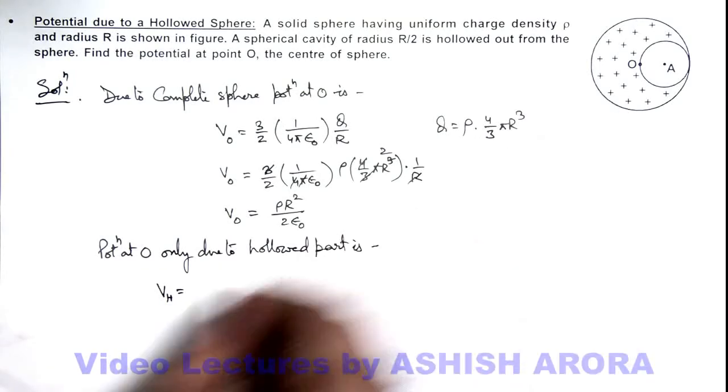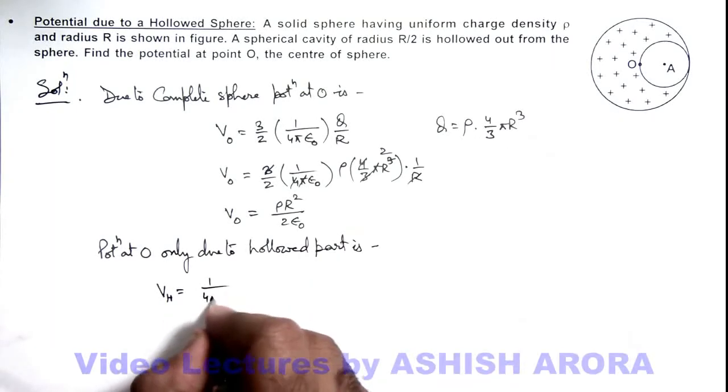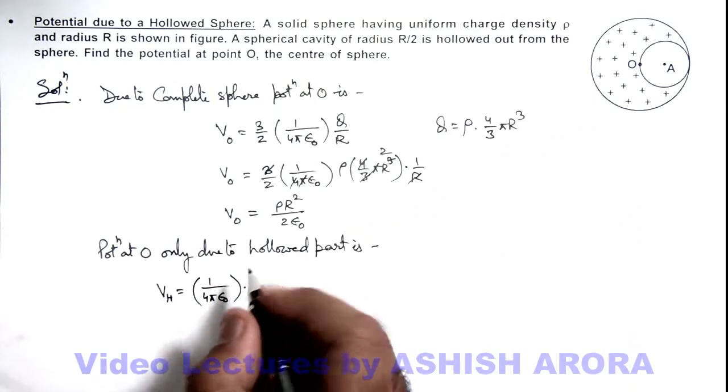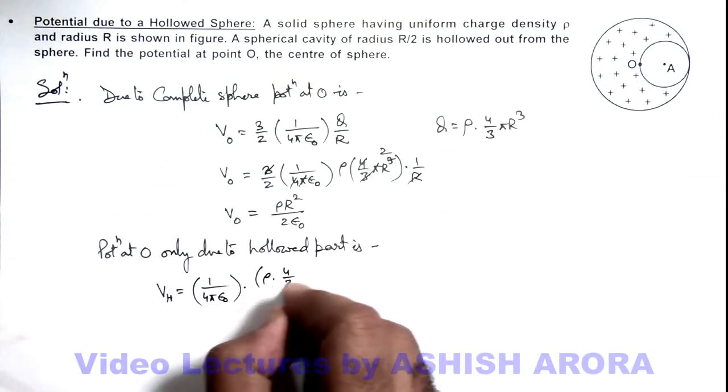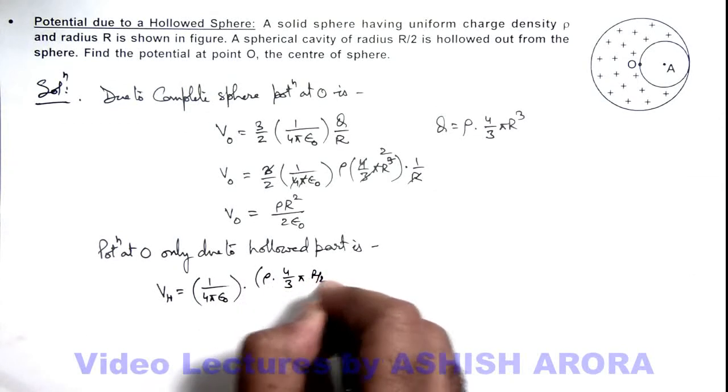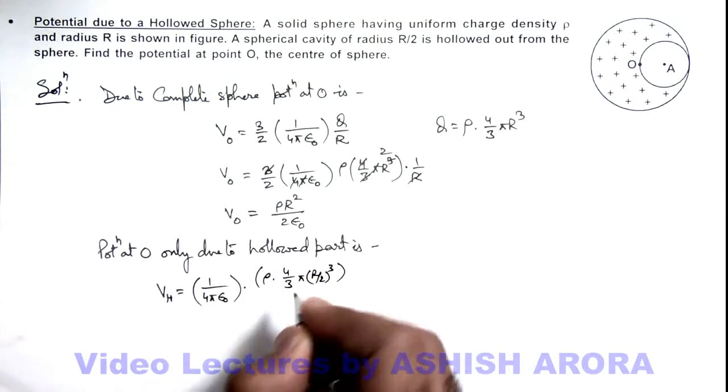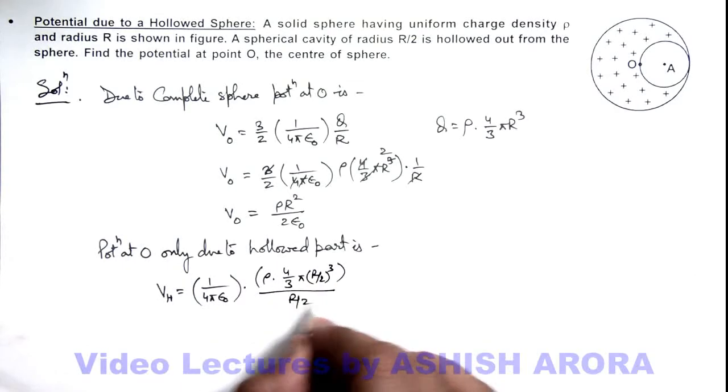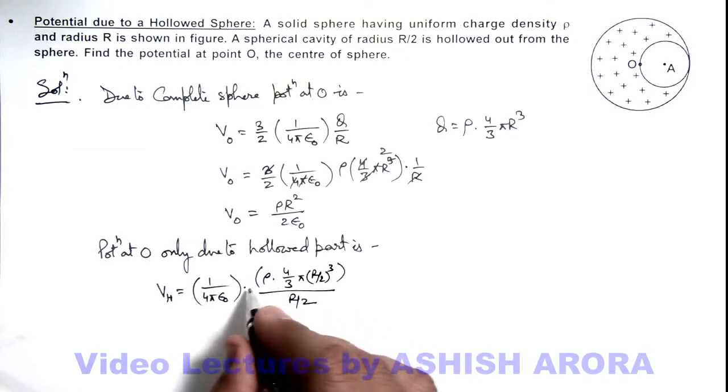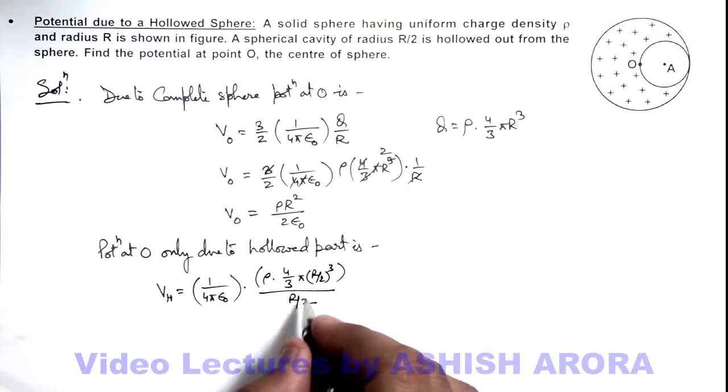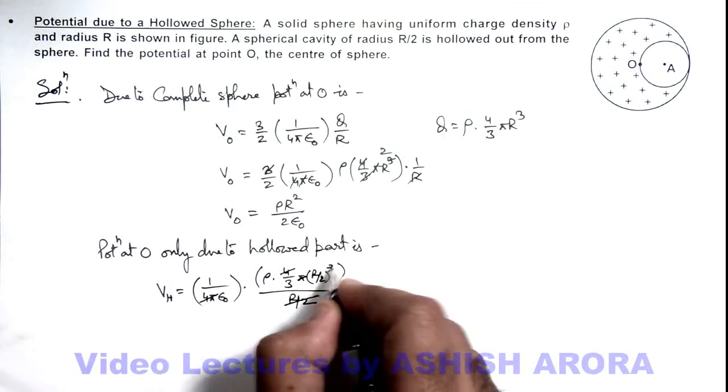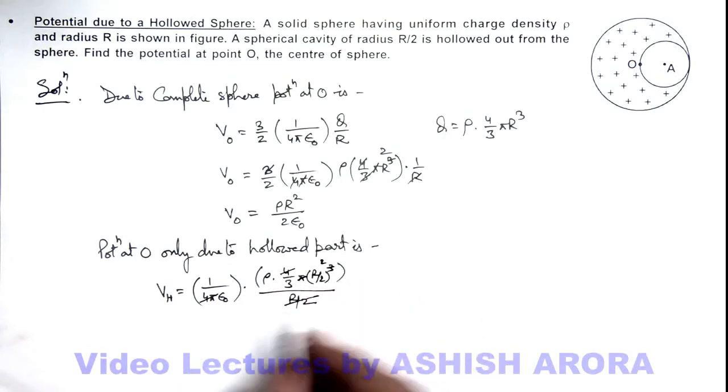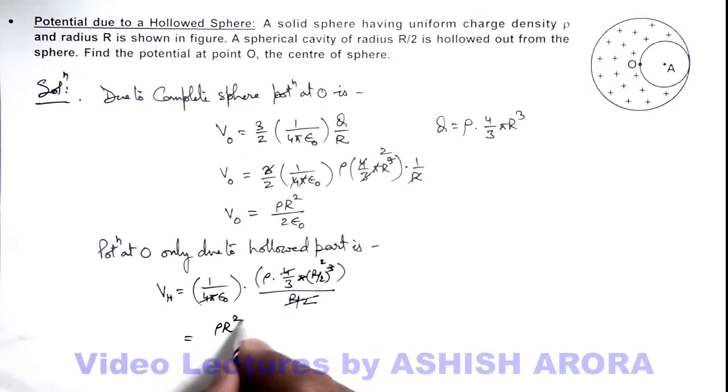This can be written as kQ/r, so it is (1/4πε₀) × [ρ × (4/3)π(R/2)³] / (R/2). So here if we simplify this result, you can see this 4π gets cancelled out, 1 R/2 gets cancelled out. So the final result we are getting is ρR²/(12ε₀).